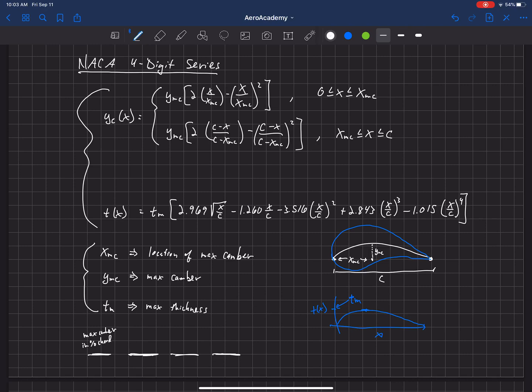The second digit, so this is tied here to the maximum amount of camber. The second digit is the location of max camber. So it's XMC in tenths of chord. And we'll go through an example here in just a moment.